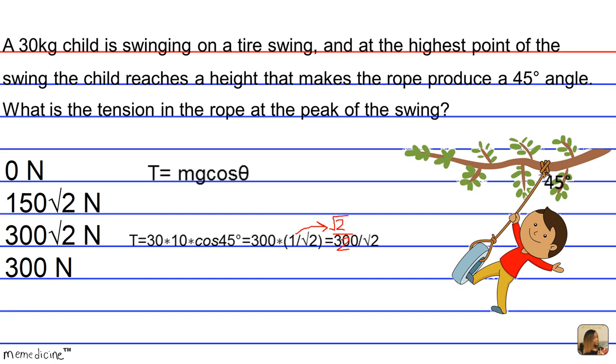So this simplifies to 300 over radical 2, and then this is going to become 150 times radical 2 newtons after we rationalize the denominator. Because this 2 will cancel out with the 300 and 300 simplifies to 150. So the correct answer choice is going to be 150 times radical 2.